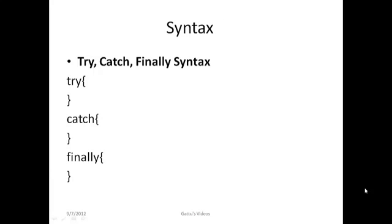Coming to the try, catch, and finally blocks — we usually write the code in the try block. If there is any exception in the try block, it is immediately thrown to the catch block. An exception object is created and sent to the catch block. The try and catch statements form a unit; the catch statement immediately follows the try. A try can have any number of catch statements, and a try can also be nested.